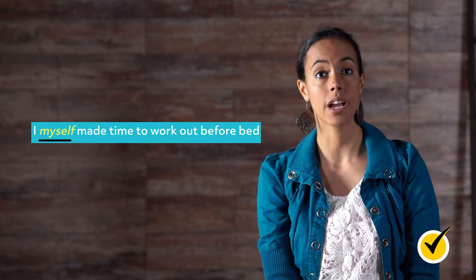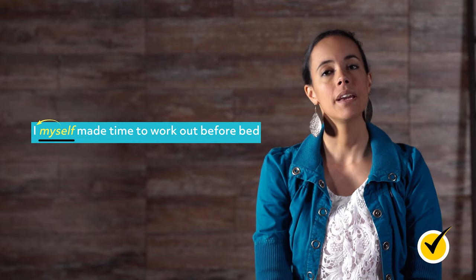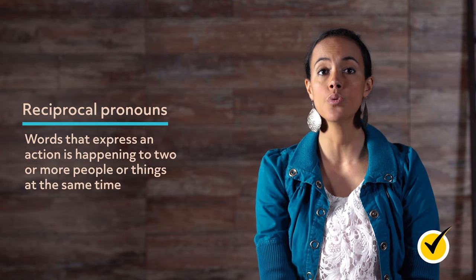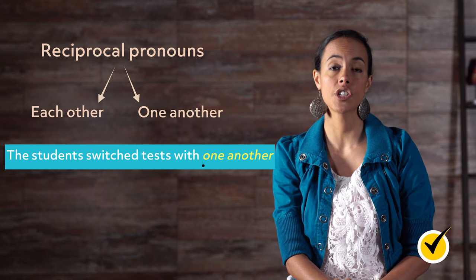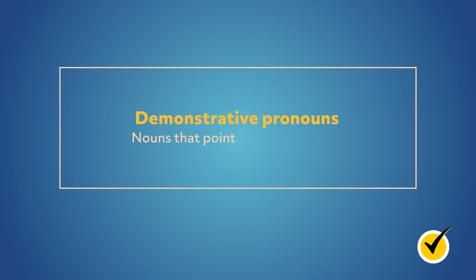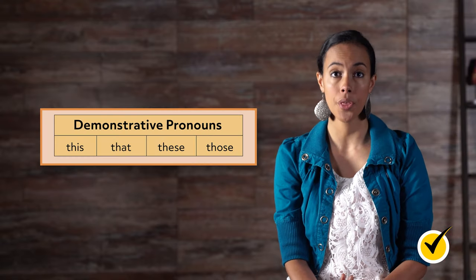Another example: I myself made time to work out before bed — myself refers to the pronoun I, making myself the intensive pronoun. Reciprocal pronouns express an action happening to two or more people at the same time, including each other and one another: The students switch tests with one another. We exchanged vows with each other. Demonstrative pronouns point to specific things — examples include this, that, these, and those.